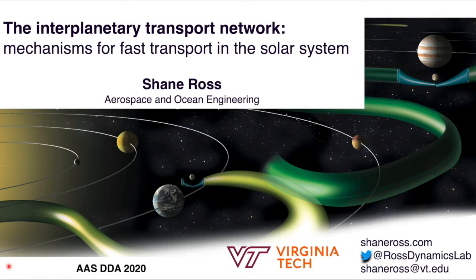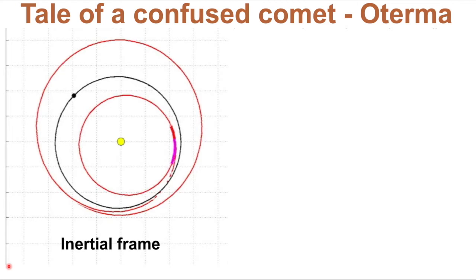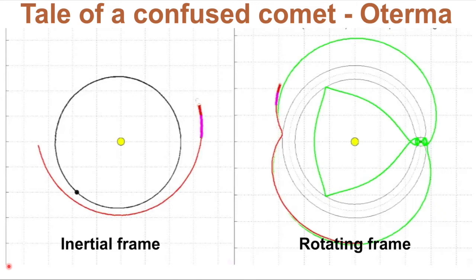Let me begin by talking about a comet. This is comet Oterma, seen in an inertial frame, as it has an encounter with Jupiter, goes into an orbit interior to Jupiter, and then has another encounter and goes to the outside.